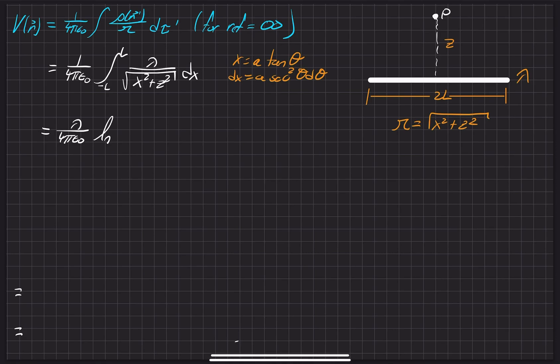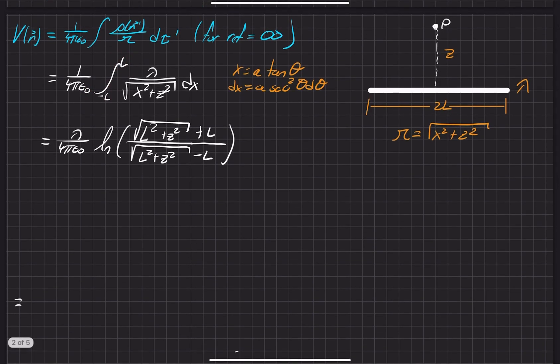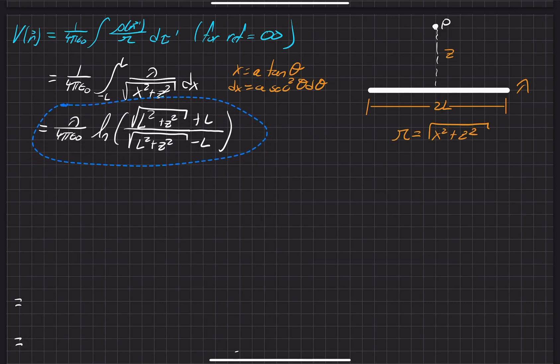The end result is what I'm about to write right now. It ends up being a natural log of L squared plus Z squared square root over the same thing. On the top is a plus L, the bottom is a minus L, and it's all captured within that square root right there. That's the end result.